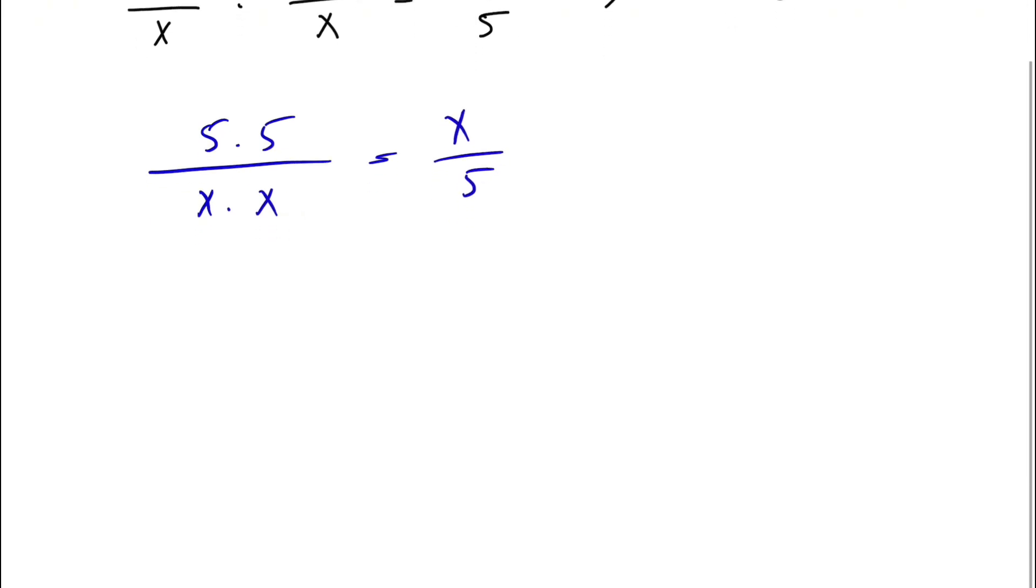So what we get in here is 5 times 5 is 25, and x times x is x squared, is equal to x over 5.